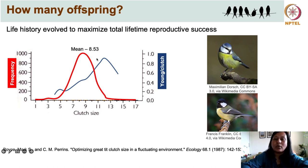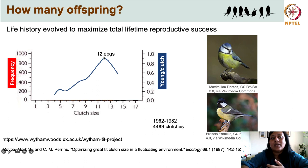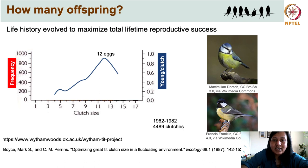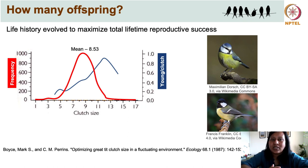But when they looked at the average clutch size for this population during this period, it was not 12 but 8.53. The most commonly seen clutch sizes were 8 or 9. The reason behind this is that individuals laying 12 eggs invested so much energy caring for this large clutch that they often did not have enough energy to reproduce in the next breeding season.